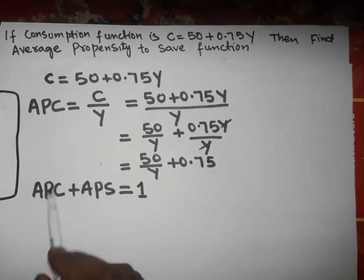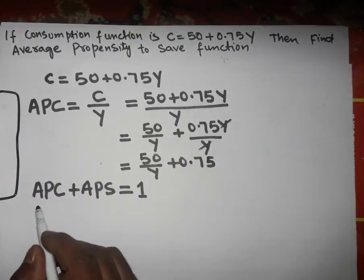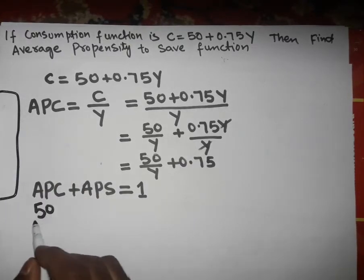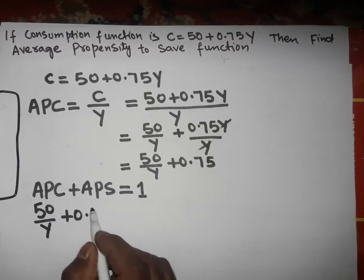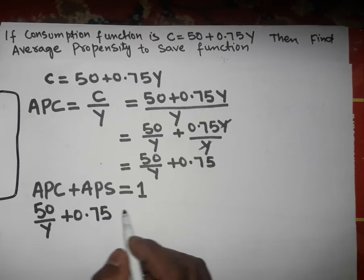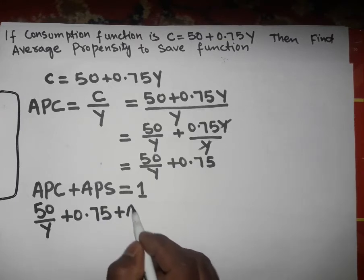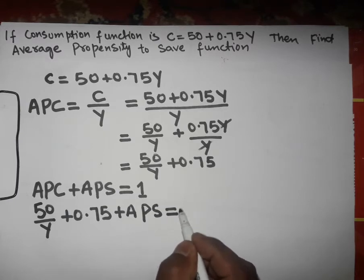So now, our APC is 50 over Y plus 0.75. Therefore, 50 over Y plus 0.75 plus APS equals 1.